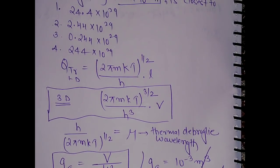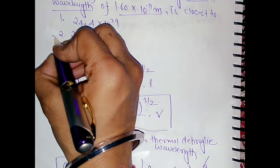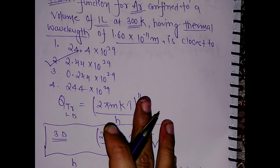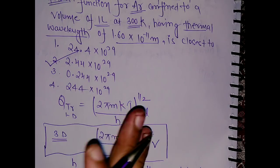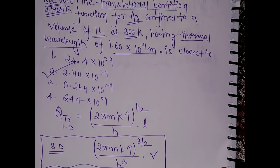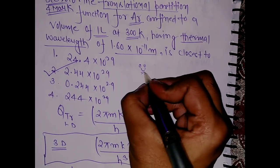This is the answer: 2.44 × 10^-29, which is option 2, the correct answer. It was very easy if you remember the translational partition function formula. Thank you and please subscribe to my channel.